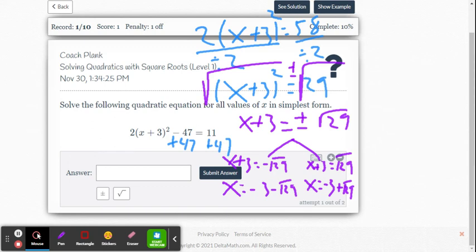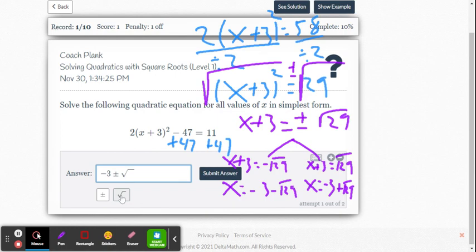So let's go ahead and write it that way. Okay, it's going to be negative 3. We're going to use the plus minus key, and then square root and 29. And that should be our answer.